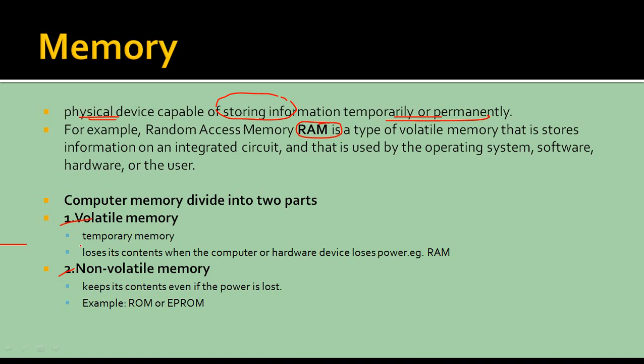Volatile memory means when the power goes off and your computer shuts down, the data you were working on gets lost. That is volatile memory. An example of volatile memory is RAM. Non-volatile memory means if the power goes off, your data remains in memory. Examples of non-volatile memory are ROM (read-only memory) and EPROM (electronically programmable read-only memory).